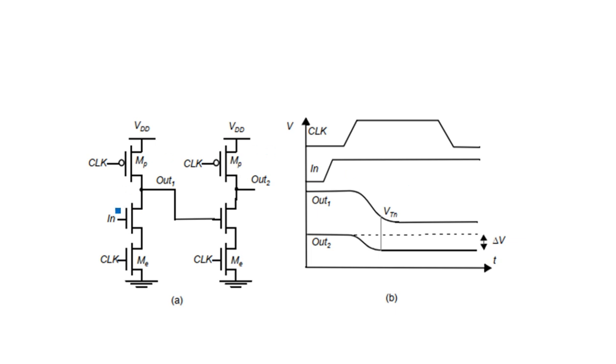Hi everyone. In this video you are going to learn about the cascading of dynamic gates. In dynamic logic design and static logic design, there are two types used to design CMOS logic circuitry. Static design is where the inputs are constant, and dynamic CMOS logic circuit design consists of a clock signal which varies continuously with respect to time. When we have cascading — one stage followed by another stage of the same type — such a configuration is known as cascading.